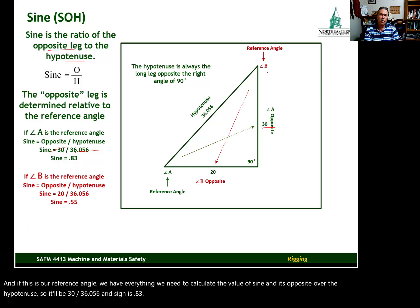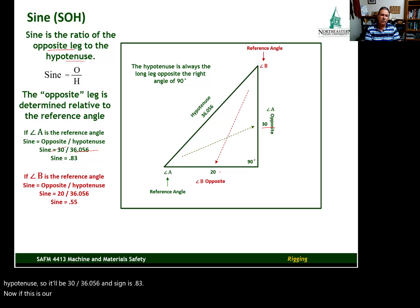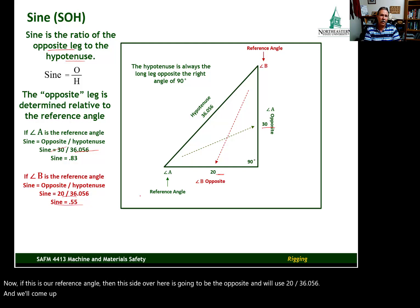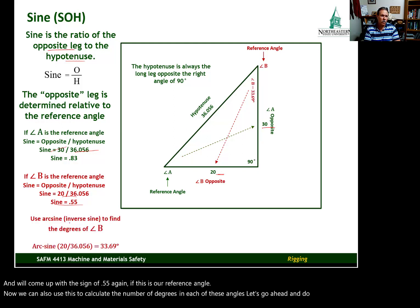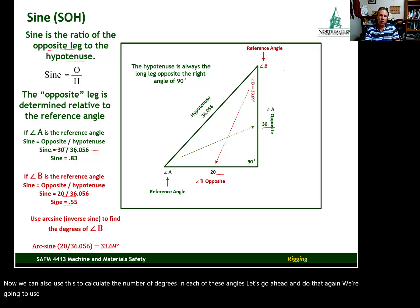We can also use this to calculate the number of degrees in each of these angles using arc sine. Let's work on reference angle B. Arc sine is a second-level function on the calculator, so we push the second key, then the sine key, then enter 20 divided by 36.056 and press enter.